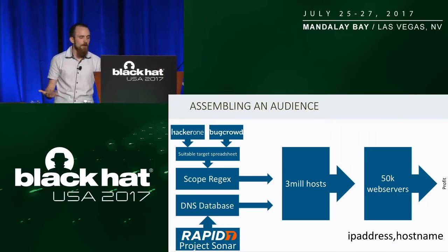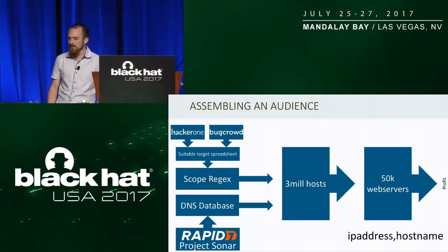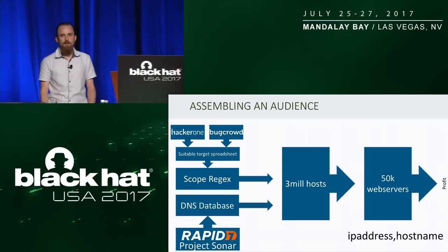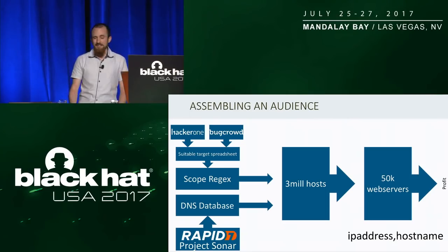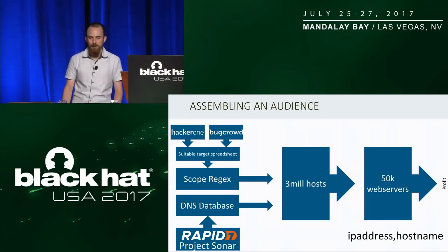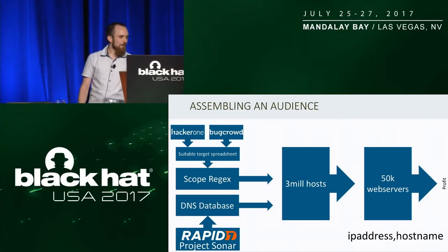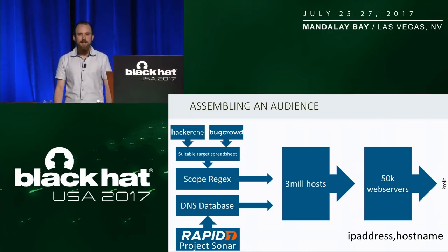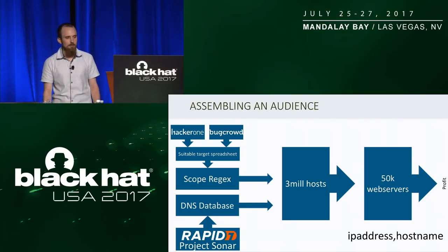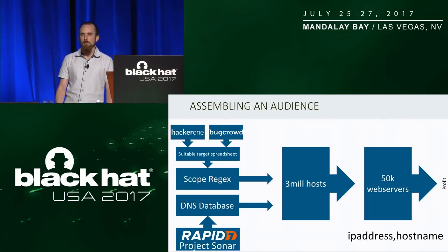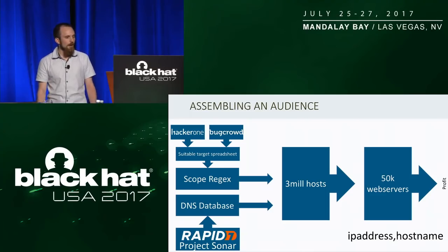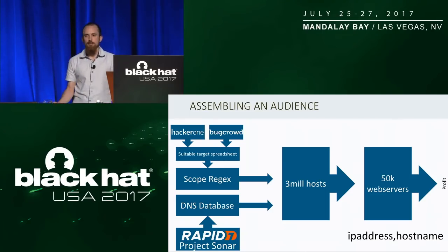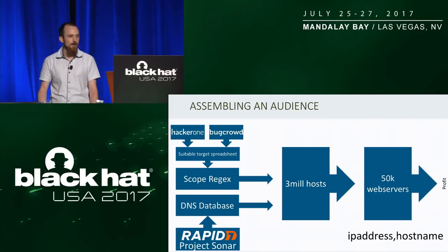I targeted everyone I could legally target: every site with a bug bounty program that doesn't forbid automated testing. I manually reviewed every single program on HackerOne and BugCrowd, which was quite boring, but at the end I had a spreadsheet from which I could generate a regular expression matching any domain name within scope of any bounty program. I combined that regex with Rapid7's Project Sonar database of all known host names, giving me a short list of three million hosts within scope of bug bounties — without sending any requests or doing any DNS lookups myself. That resolved to about 50,000 active web servers.